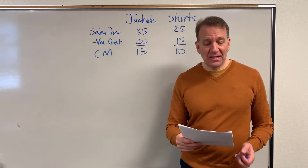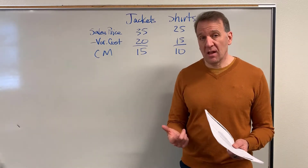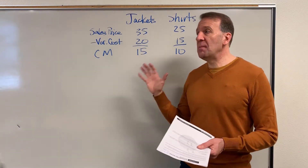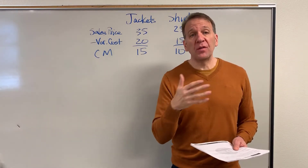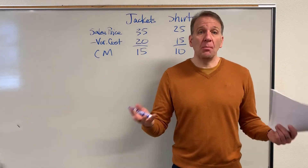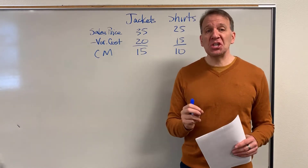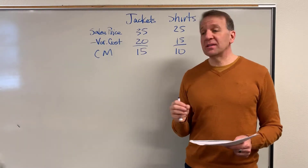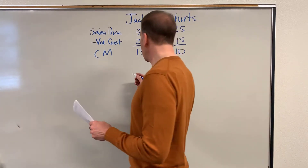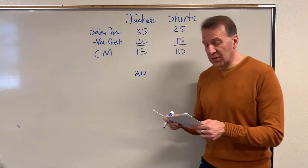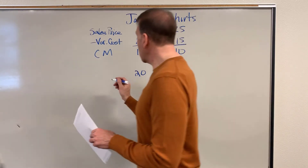Now let's introduce a constraint. A constraint is when something restricts the amount of product you can manufacture or sell. We're manufacturing jackets and shirts, and we have a machine that produces both of these items. The machine can only produce so much — that's our constraint. We have a constraint by the number of hours this machine can work. So now we want to convert this contribution margin to the constraint. The constraint says we can produce 20 jackets per hour or 35 shirts per hour.